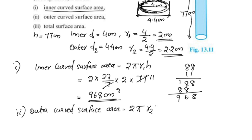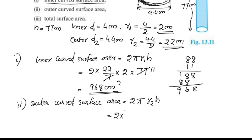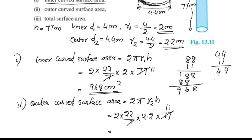The outer curved surface area: r2 is 2.2. It is equal to 2 into 22/7 into r2 (2.2) into h (77). We cut: 77 divided by 7 is 11. So we get 2 into 22 into 11, which equals 44 into 11, giving 484.